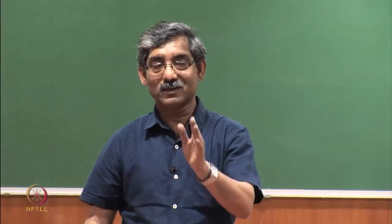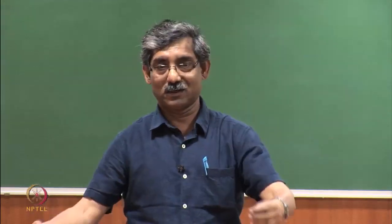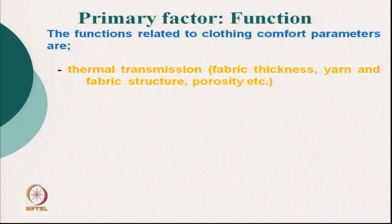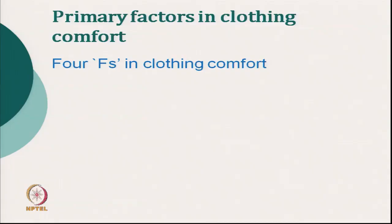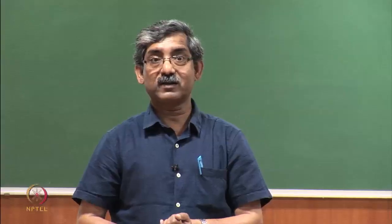In the next segment we will discuss the psychological aspects of clothing and how all the sensations we receive from different parts of the body are processed. There are 4 different factors controlling clothing comfort, called the 4 Fs of clothing: function, feel, feet, and fashion.